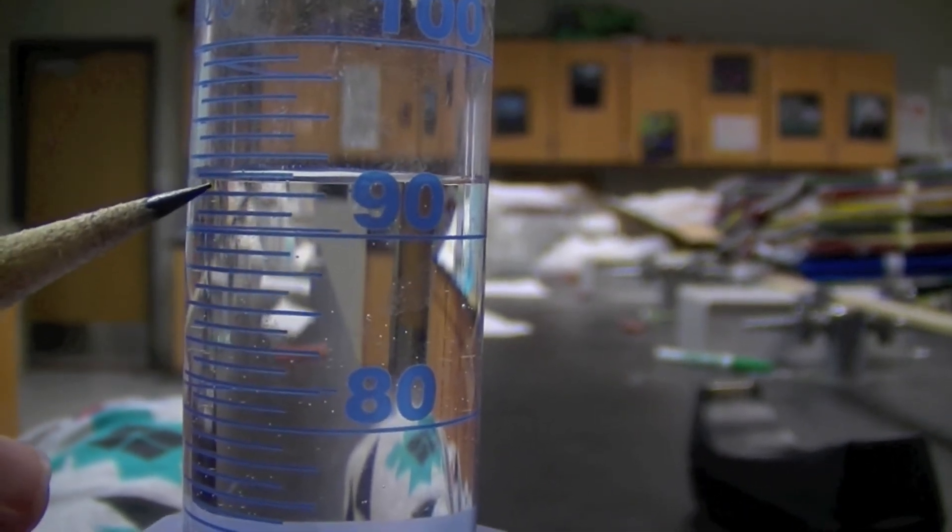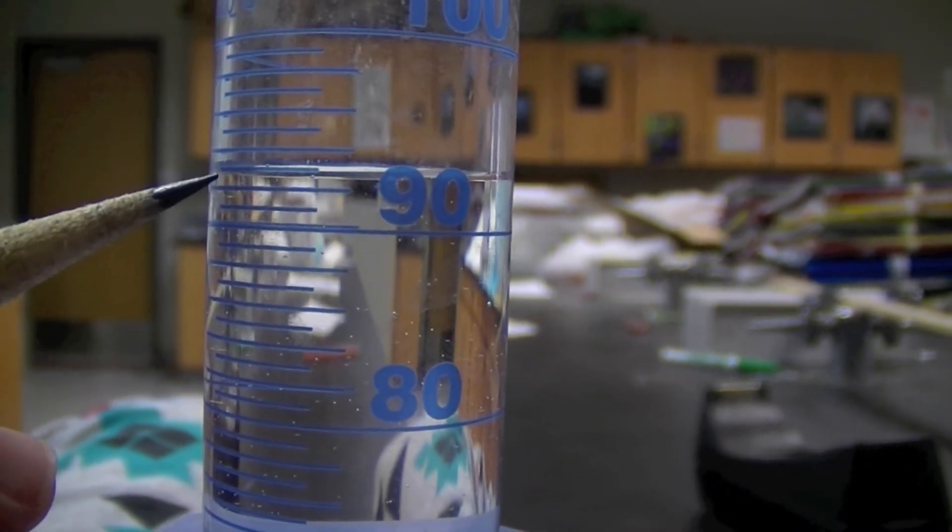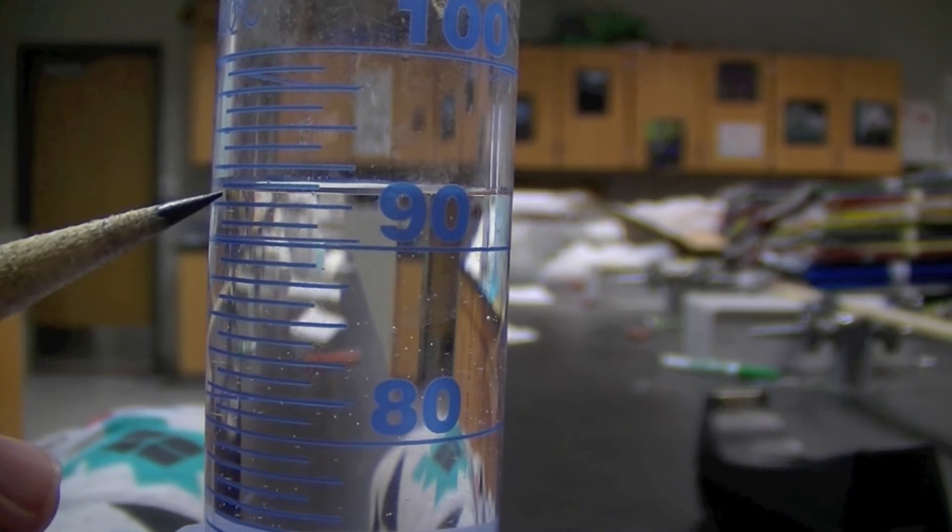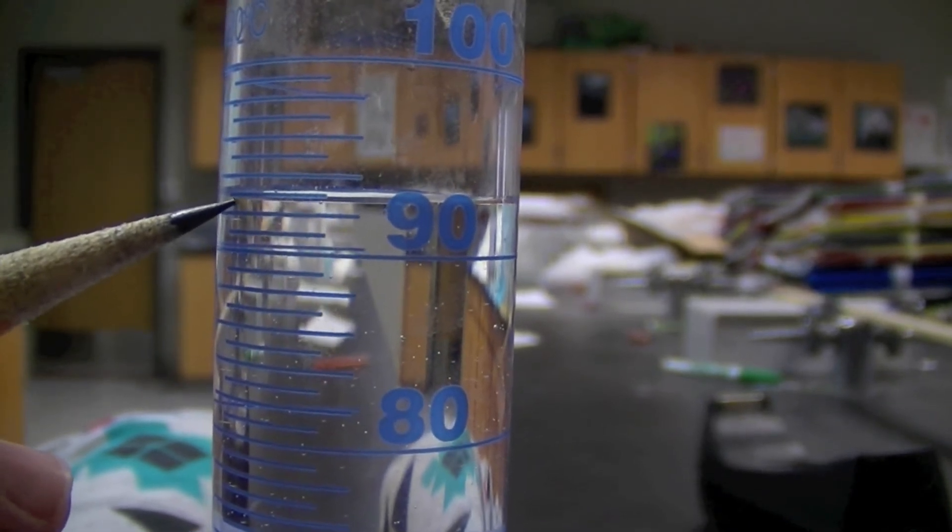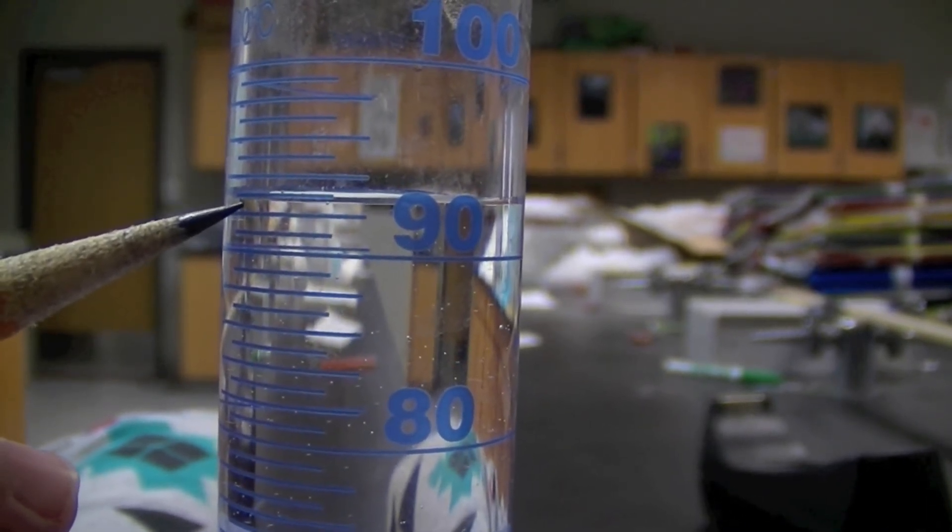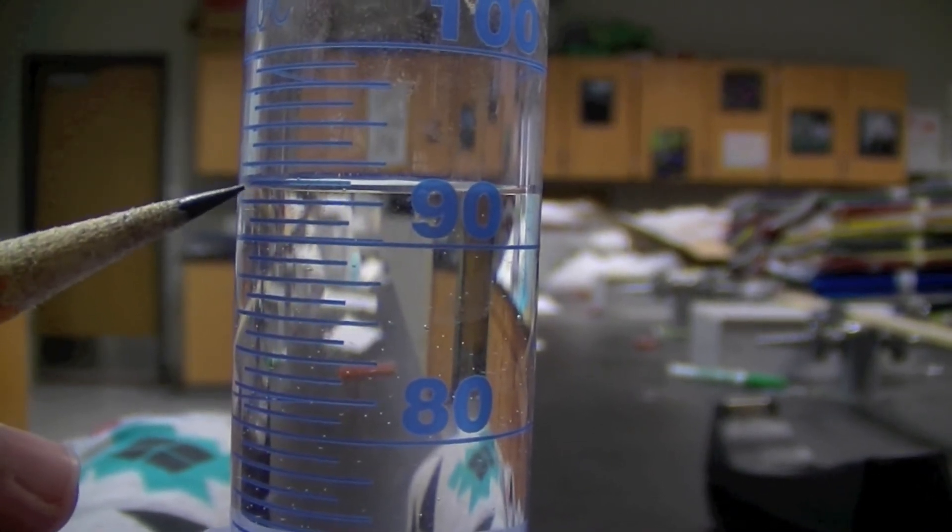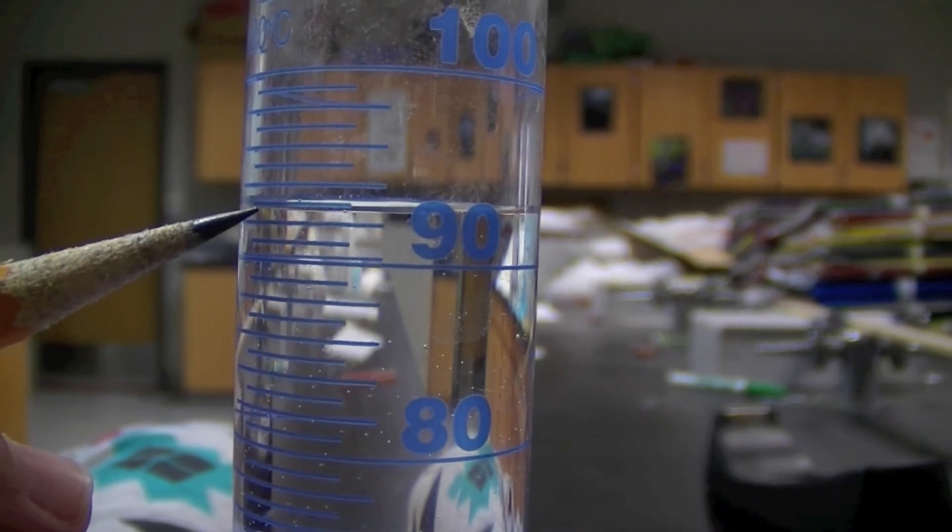Also, we have to make sure that we estimate. So if we're estimating here, it would be 92.8 milliliters from the bottom of that meniscus. We always measure from the bottom of the meniscus, which in this case would be 92.8 milliliters.